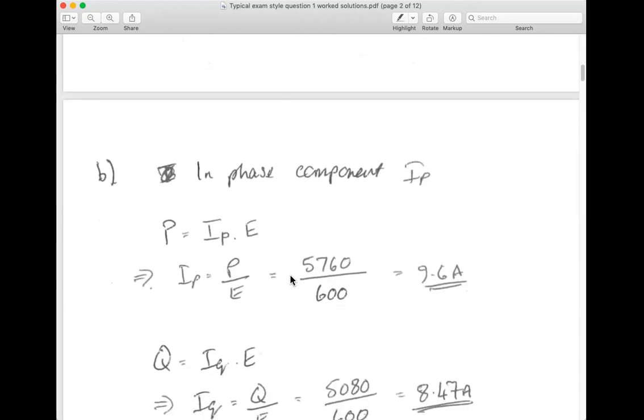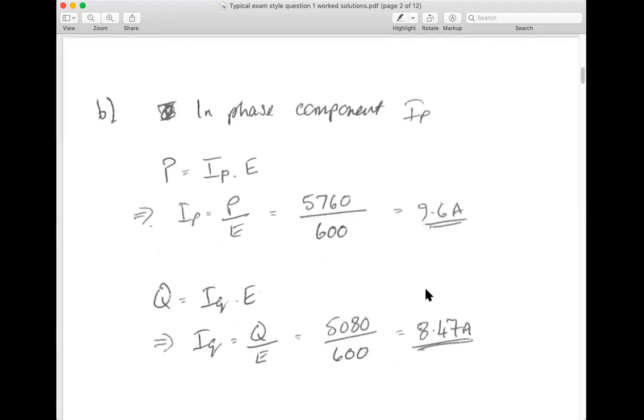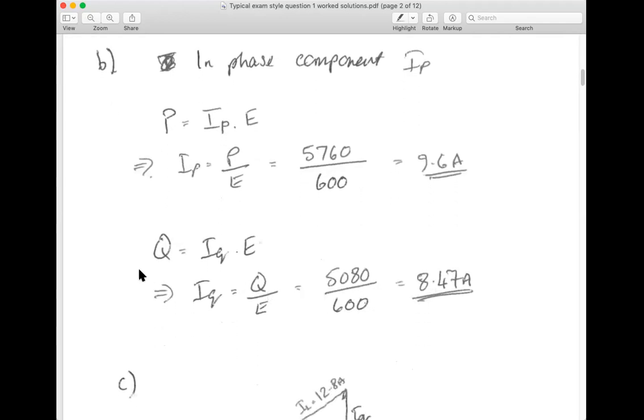The in-phase component I_P - we can isolate just the power. We can use that in the power formulas. Rearrange that, I_P as P over E, we get 9.6 amps. Then we can do the same thing with Q. Find the current due to the reactive power, if we use Q and E rearranged, 8.47 amps.